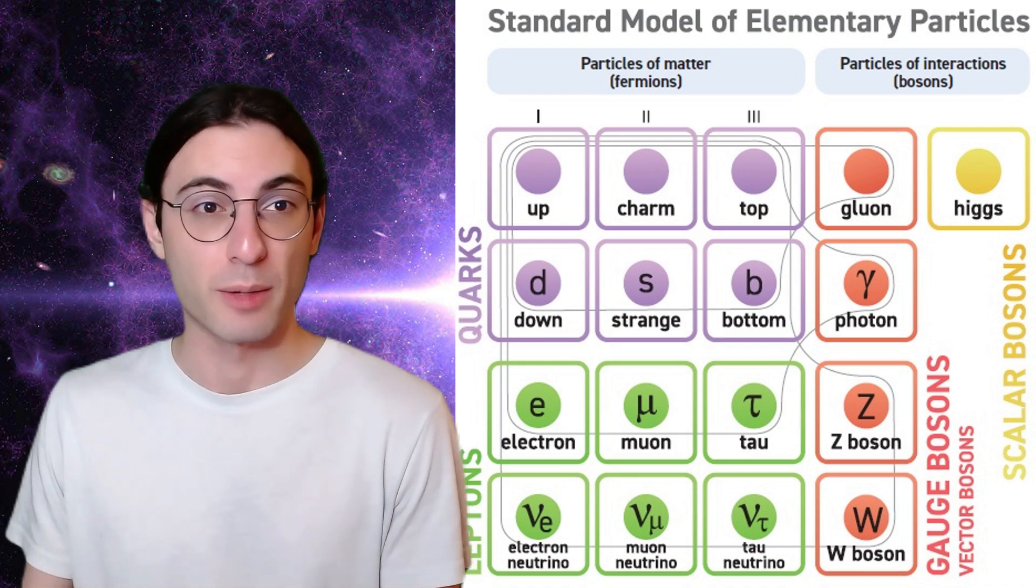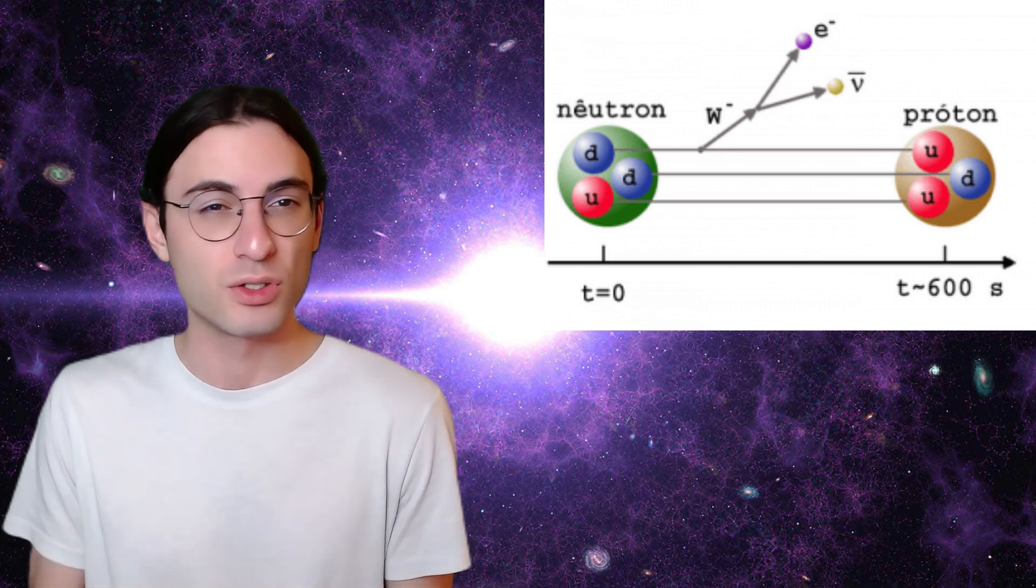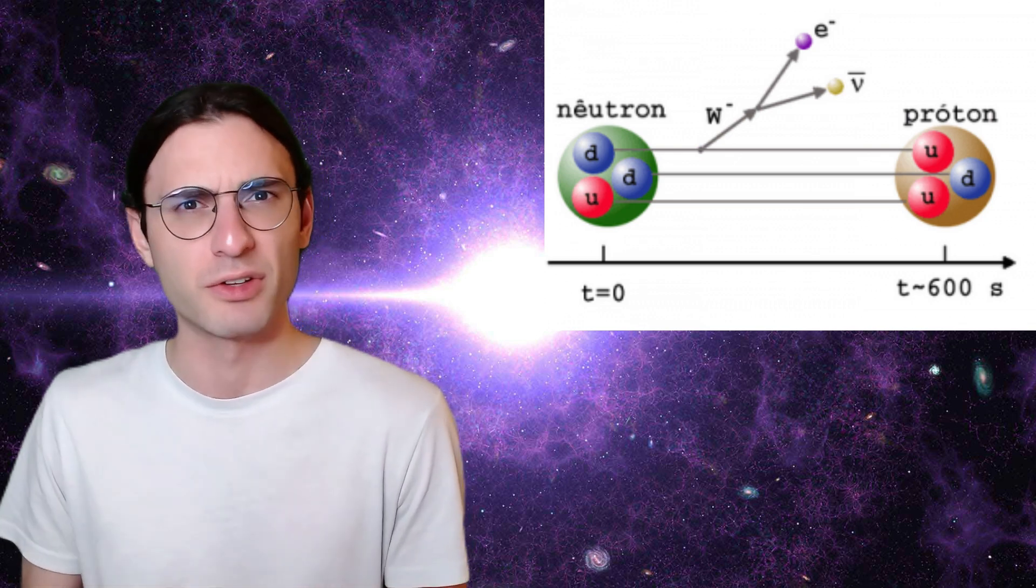Well, we know from independent particle physics experiments that there are three species of neutrino. Furthermore, we need to know the rate at which neutrons decay into protons. It's about 15 minutes. Some other details, like the mass of the proton, the neutron, and the helium nucleus are also needed, but these are also independently measurable.